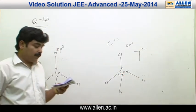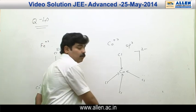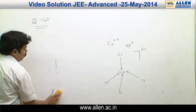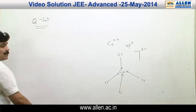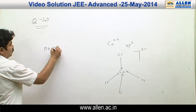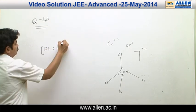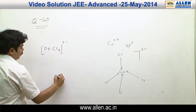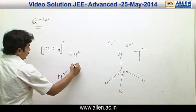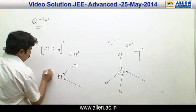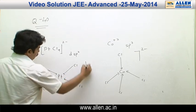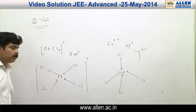Another option is PtCl₄²⁻. PtCl₄²⁻ has 4 weak field ligands, but due to the greater effective nuclear charge (Z effective) of Pt²⁺, it has dsp² hybridization and a square planar geometry.